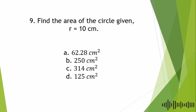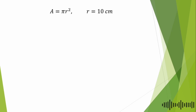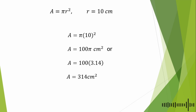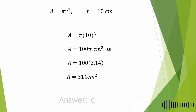Number 9: find the area of the circle given that the radius is equal to 10 cm. A. 62.28 cm², B. 250 cm², C. 314 cm², D. 125 cm². The formula for the area of a circle is A = πr². Substituting: A = π × 10² = 100π. Using π = 3.14, we get 100 × 3.14 = 314 cm². The answer is letter C.